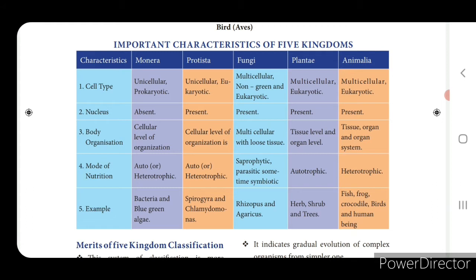The five kingdoms given are: Monera, Protista, Fungi, Plantae and Animalia. For cell type - whether unicellular or multicellular, prokaryotic or eukaryotic: Monera is unicellular prokaryotic; Protista is unicellular eukaryotic; Fungi is multicellular, non-green and eukaryotic; Plantae is multicellular and eukaryotic; Animalia is multicellular and eukaryotic.